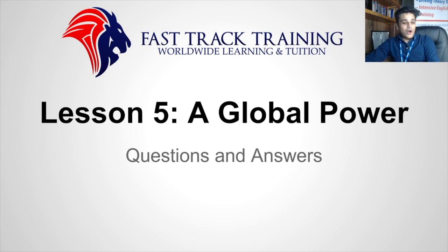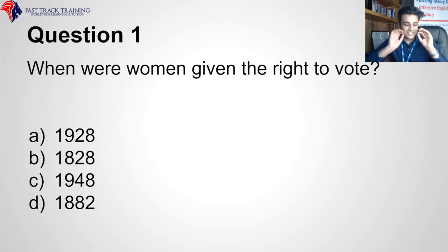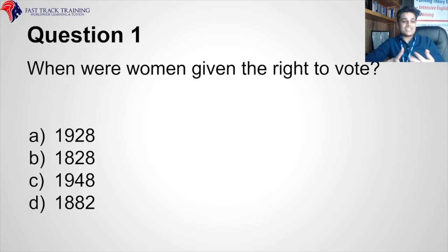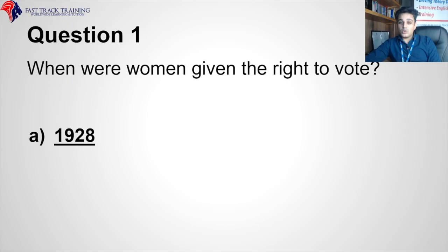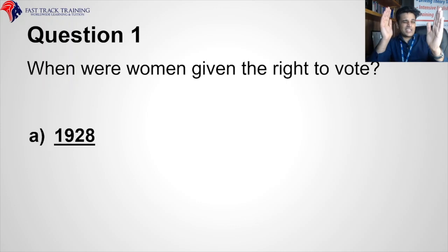Now let's go through the questions again with tips and tricks. When were women given the right to vote — 1928, 1828, 1948, or 1882? Remember: it's after World War I (1914–1918). The answer is 1928 — between the First World War and the Second World War (1939–1945). Whatever date falls between 1918 and 1939 is your answer.